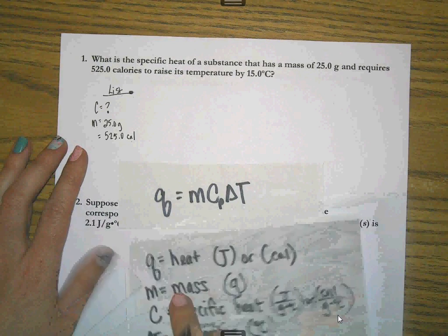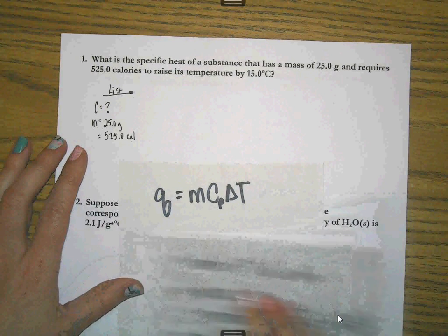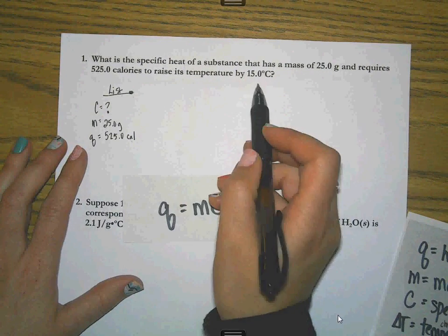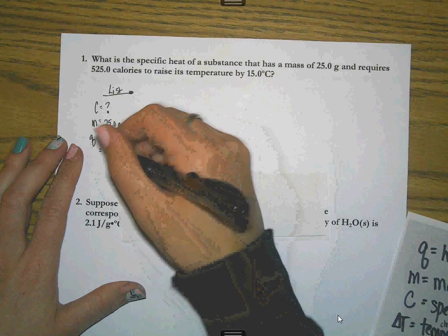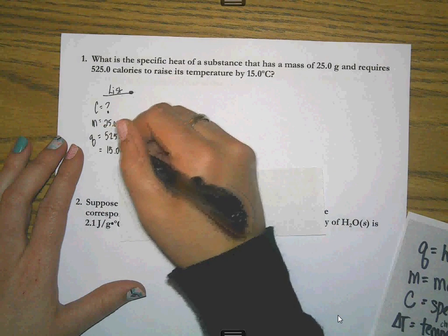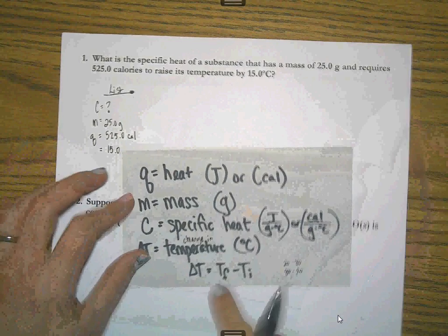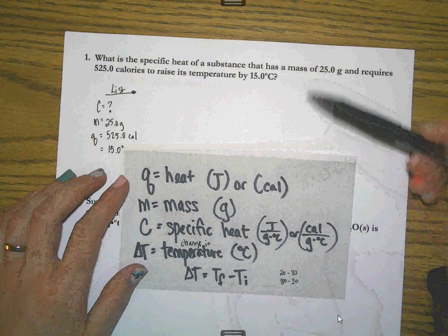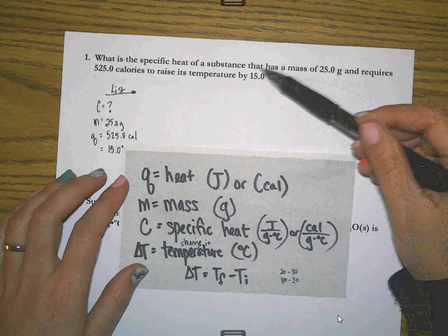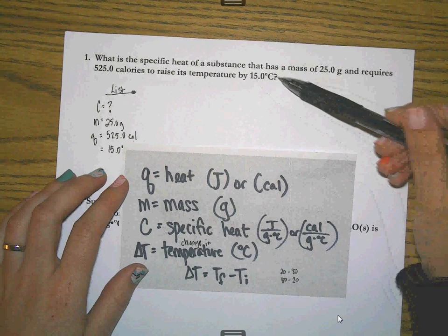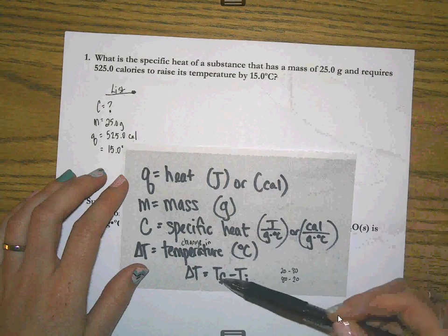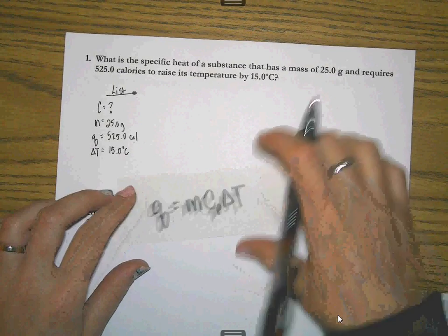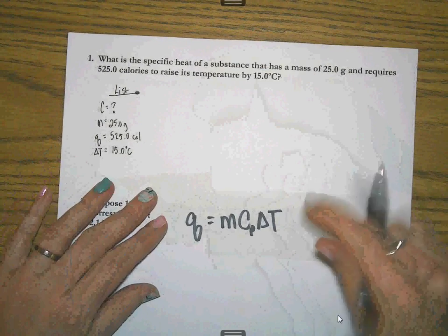It requires 525.0 calories. Well, I recognize from my list that calories measures heat, so that's going to be Q. And it needs to raise its temperature by 15 degrees Celsius. Some people are going to freak out over the fact that it doesn't give me an initial and a final temperature. But if they don't tell me what its starting temperature is, they just tell me the overall change. If it's raised by 15 degrees, this is delta T. I don't need a final and an initial. They've actually saved me some work and given me a delta T.